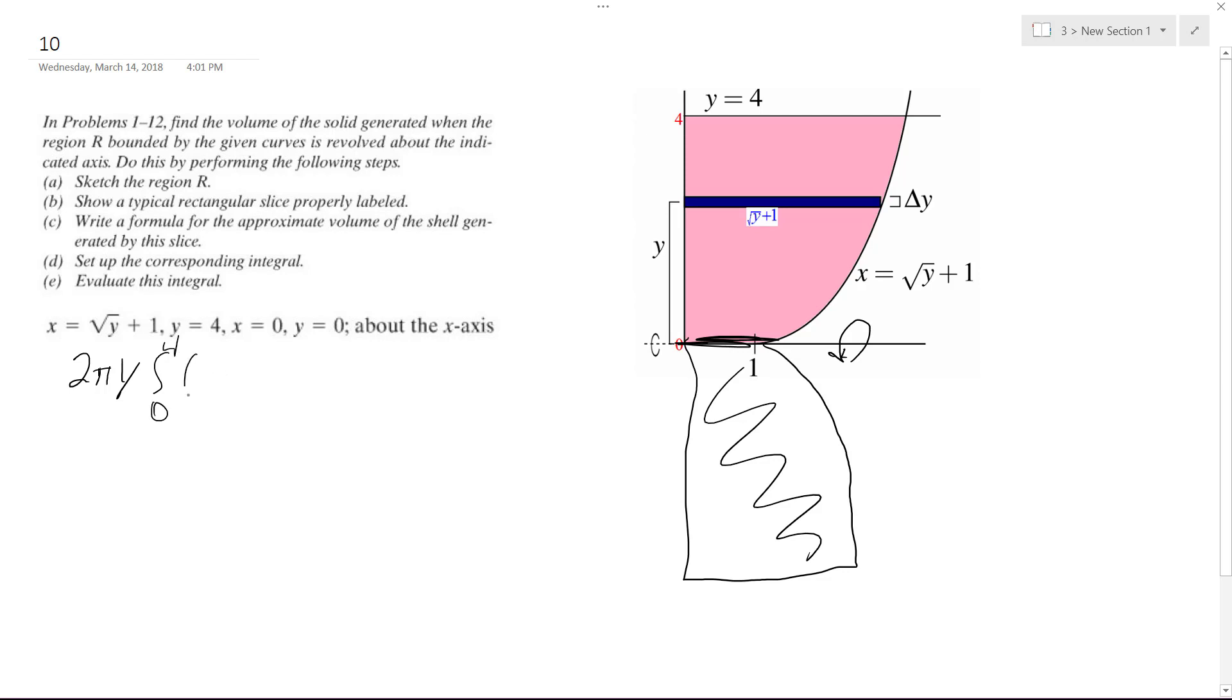And it's going to be y to the 1 half plus 1, and I got to distribute that y. So it's going to be 2π, 0 to 4, y raised to the 3 halves plus y.